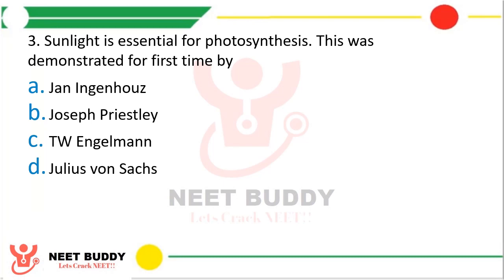Question 3. Sunlight is essential for photosynthesis — this was demonstrated for the first time by option A: Jan Ingenhaus, option B: Joseph Priestley, option C: T.W. Engelman, or option D: Julius Von Sachs. The correct answer is option A — Jan Ingenhaus demonstrated that sunlight is essential for photosynthesis.